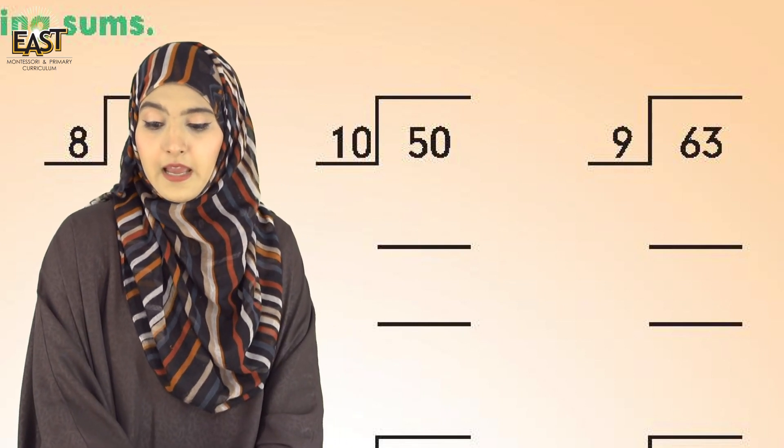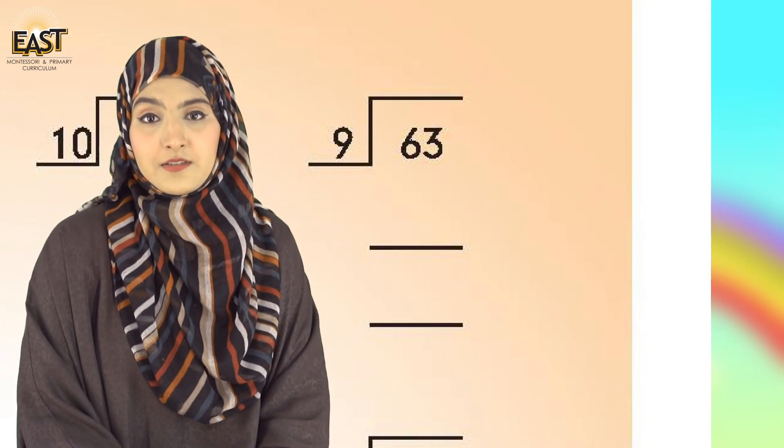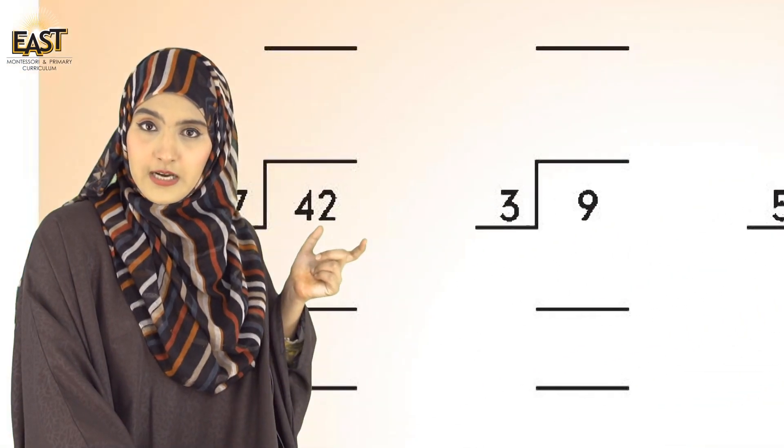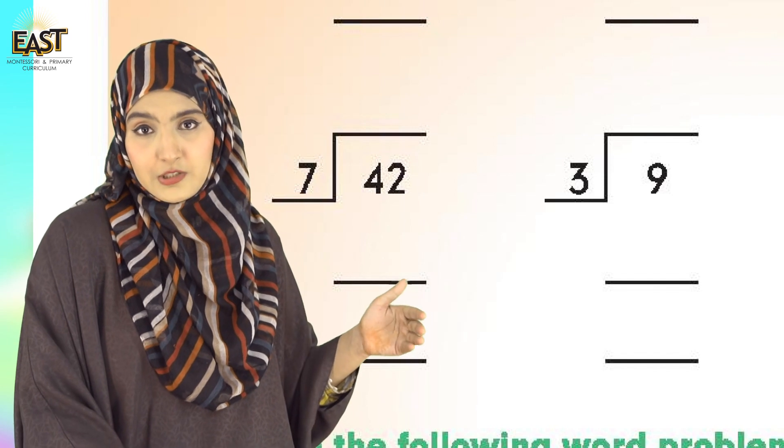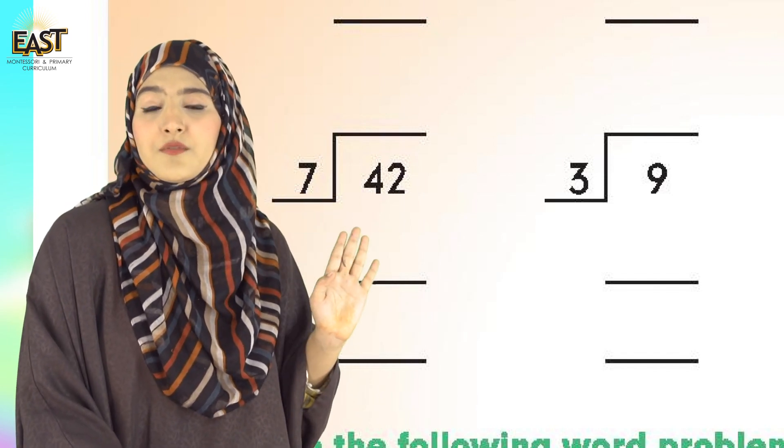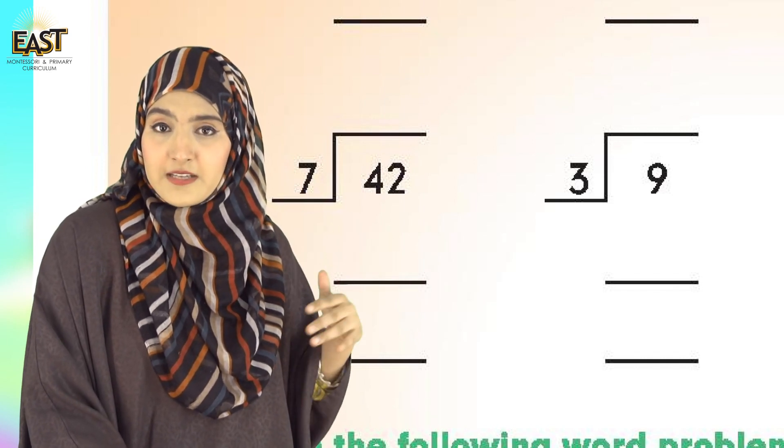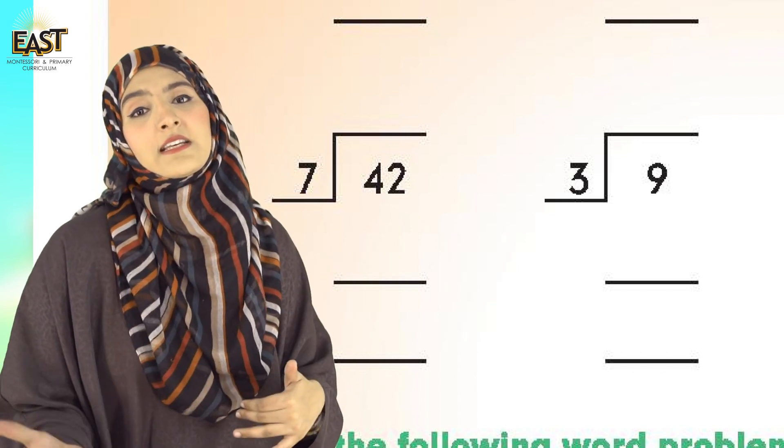And yeah, 9 upon 9 divided by 63, you all have to do on your own. And I want you all to start doing this question with me: 7 divided by 42. Read 7 times table: 7 times 6 will give you 42. Which means if you have 42 candies and you have 7 friends, each friend will get 6 candies.